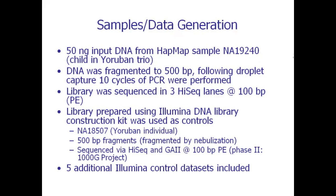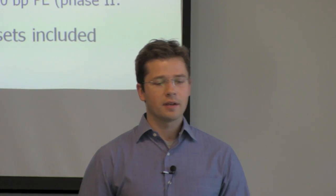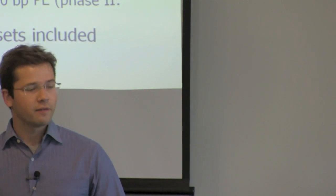I was not at all involved in the library construction phase, but it's my understanding that it was done using just 50 nanograms of input, which is pretty low. The library was generated using a HapMap sample — one of the Yorubin Trio DNA samples. It was done by first fragmenting the DNA to 500 base parent fragments. Then on the Mondrian system, following droplet capture, there were 10 cycles of PCR enrichment, and the whole thing was sequenced on a HiSeq machine in three lanes using 100 base pair reads in a paired-end fashion.